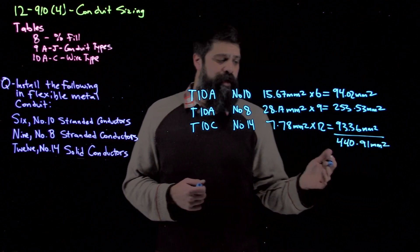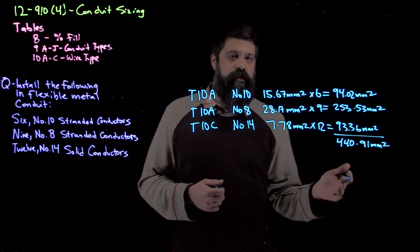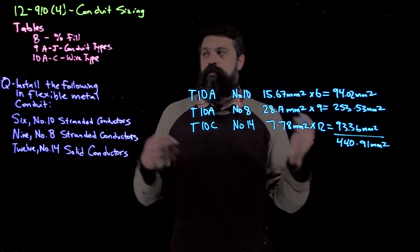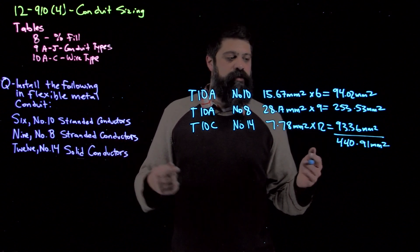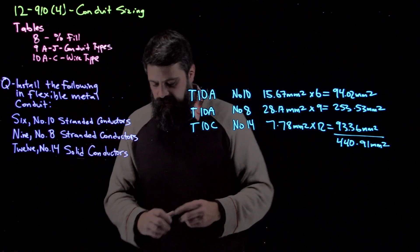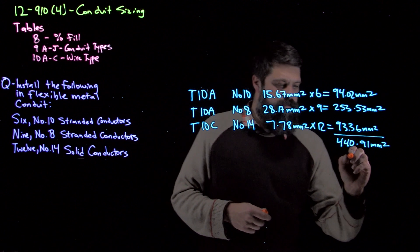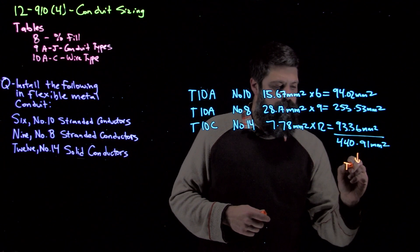Now we need to know the percentage fill that we can actually fill a conduit up to. That's where we go back over to table 8. When I have more than 4 conductors, I'm going to be into a 40% fill. All right, so take this down, table 8.